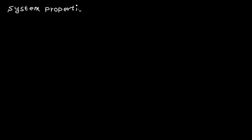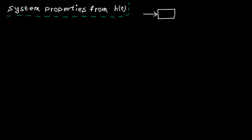Welcome to my lecture on system properties from the impulse response. I already had a lecture on system properties, so please watch it before continuing this tutorial. In this video, I want to use H(t) to find system properties. As a reminder, the response to the delta function is called the impulse response or H(t). For an LTI system, the whole system can be identified by H(t), and H(t) is the richest response we can get from an LTI system.